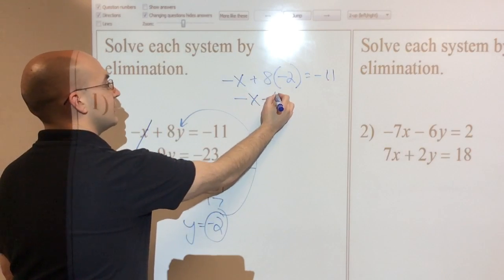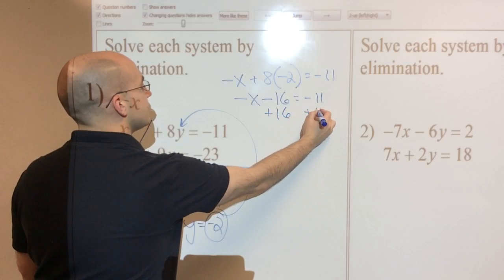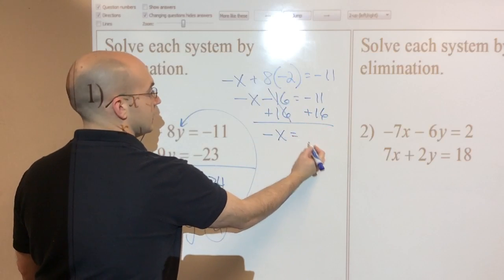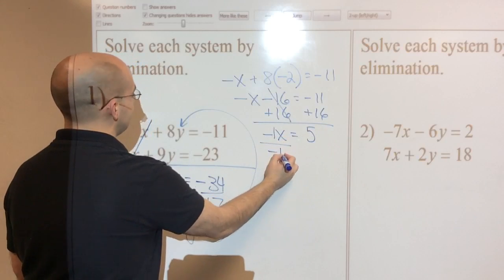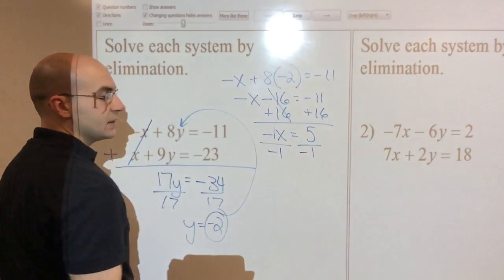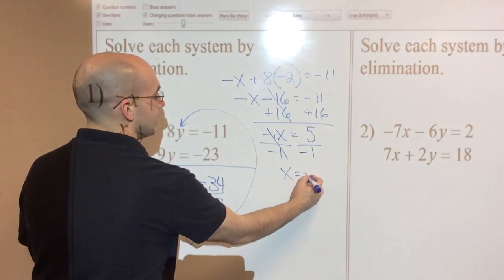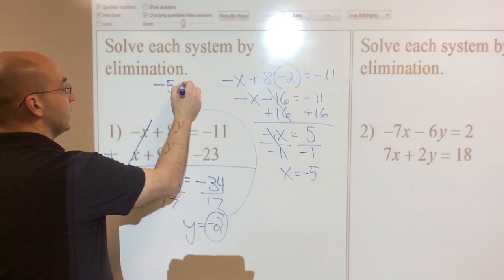Negative x minus 16 equals negative 11. I'm going to add 16 to both sides. Negative x is going to equal 5. Now this is tricky. This is a negative 1x. I've got to get that negative sign out of there. I know that's weird, but I have to get rid of the negative. So I'm left with x is going to equal negative 5. So my answer to this system is negative 5 comma negative 2.